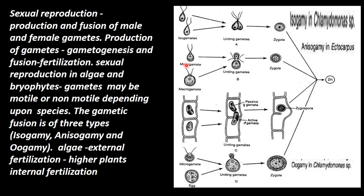In isogamy, the fusing gametes are morphologically similar (isogametes), and their fusion forms a zygote. In anisogamy, the two gametes differ in size or form, and their fusion also forms a zygote.